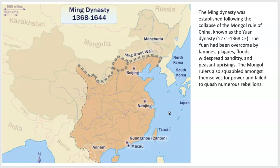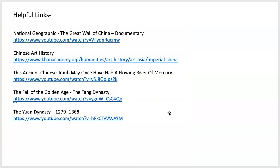The Ming dynasty took over after the Mongol rule. Basically, the Mongols faced famine, plagues, floods, and natural disasters, along with a lot of internal infighting, which enabled the Ming dynasty to take over. That's where we'll end — here are a bunch of helpful documentary links if you want to learn more. It's a lot of information — I hope you made it through, and thank you for listening.